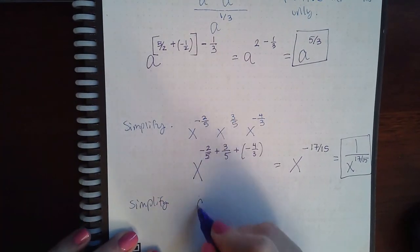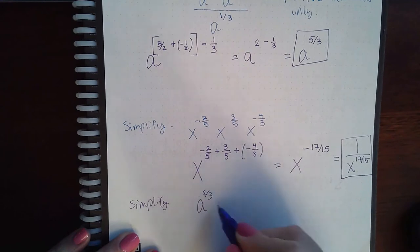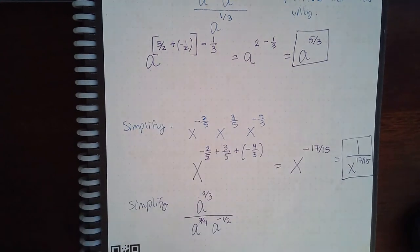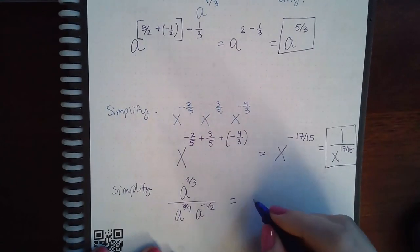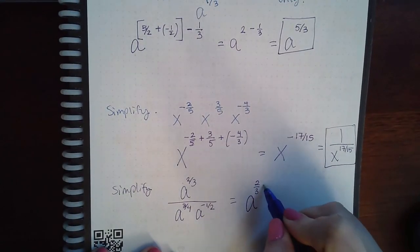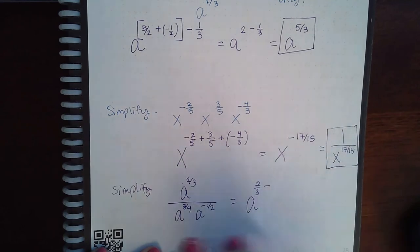So let's say I have a to the two thirds over a to the three fourths and a to the negative one half, something like that. Then that means I do have a with the same base, and I would have to take the numerator and subtract the denominator. But there's a bunch of stuff going on in this denominator, so I'm going to use a parentheses or a bracket.